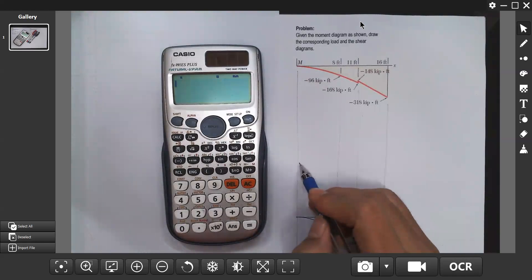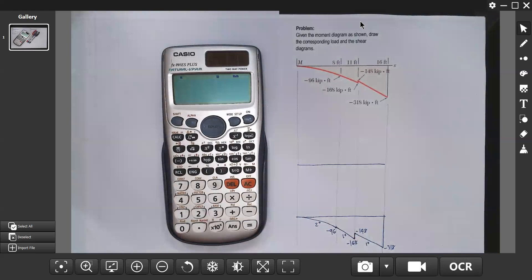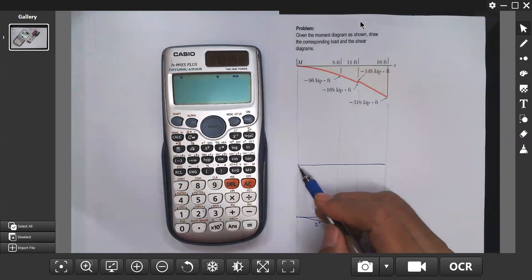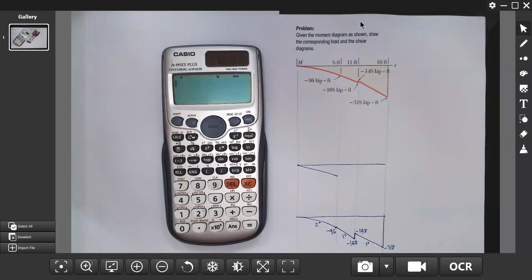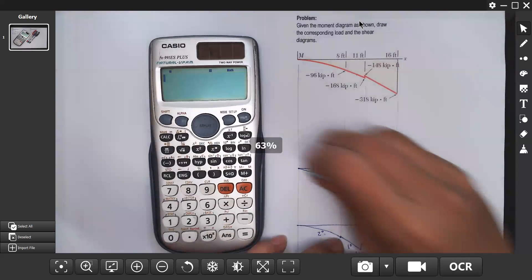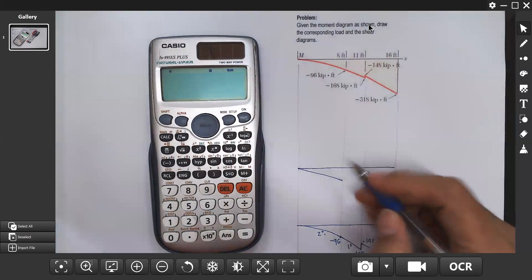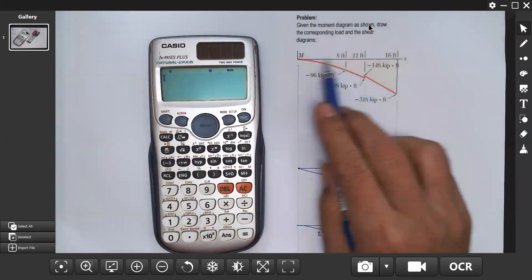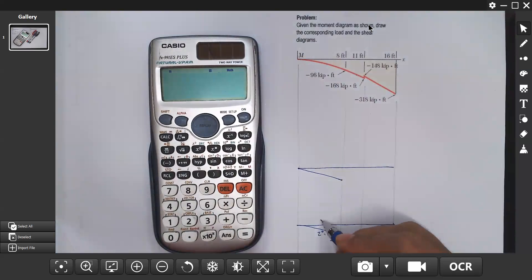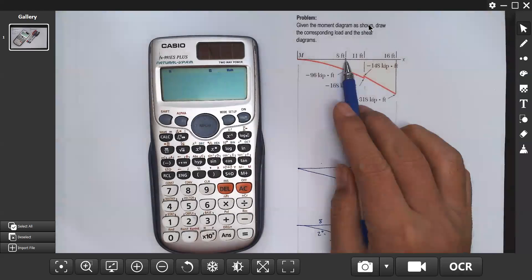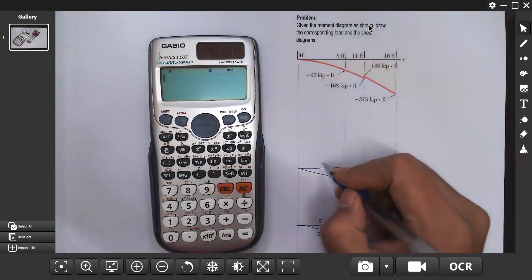Let's draw the shear diagram. Now, if the moment diagram is second degree, it means the shear diagram is first degree. So from zero, first degree, probably. The distances are: eight, eight minus zero to eight, eight to eleven is three, and eleven to sixteen is five. So eight, three, and five.